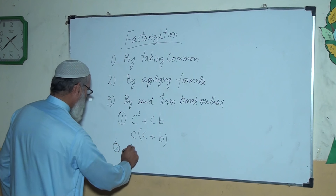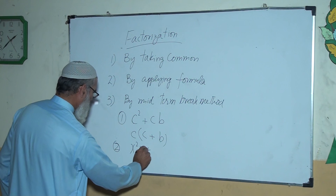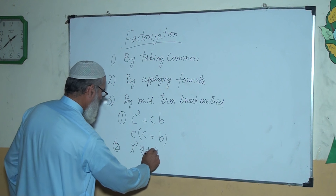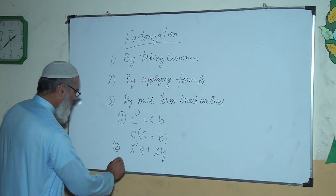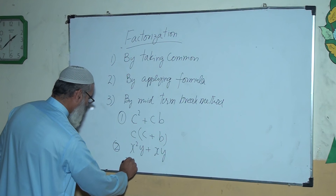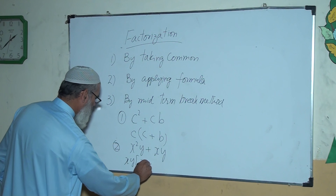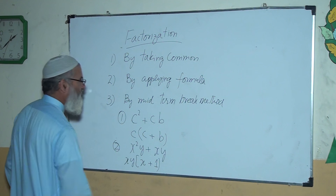Question two: x squared y plus xy. Taking xy as a common, there will be xy(x plus one).